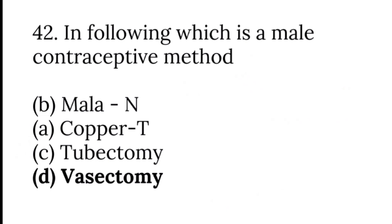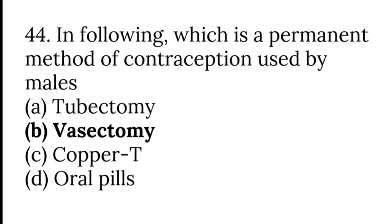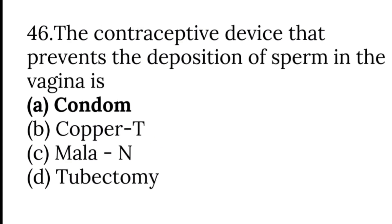A male contraceptive method is vasectomy. A female contraceptive method is the copper T. The permanent method of contraception used by males is vasectomy, and for females it is tubectomy. The contraceptive device that prevents the deposition of sperms in the vagina is the condom.